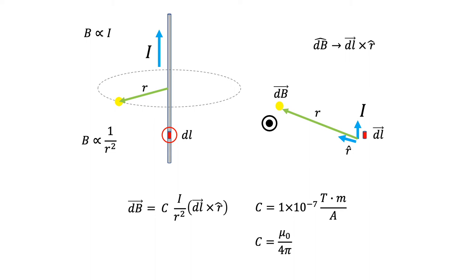And we often write this constant in another way, and this is C equals mu naught divided by 4 pi, where mu naught is called the vacuum permeability. And based on this numerical value, mu naught is equal to 4 pi times 10 raised to negative 7.